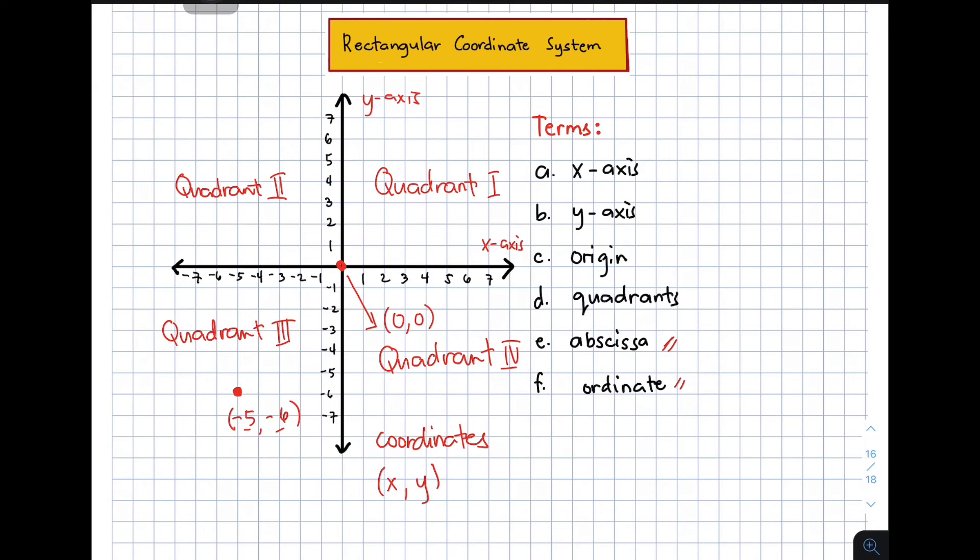How did I know that its coordinates are negative 5 and negative 6? First, you need to look at your x-axis. Look at this point. It's aligned with negative 5. So that is your x coordinate. And the point with regards to the y-axis is aligned with negative 6. That's why the coordinates of that point are negative 5 and negative 6.